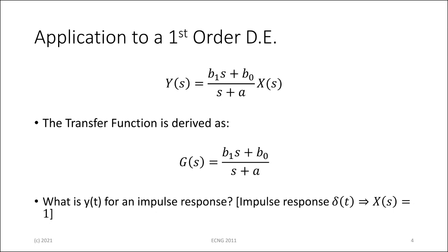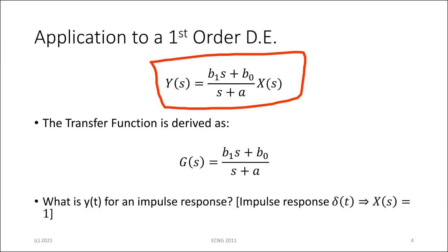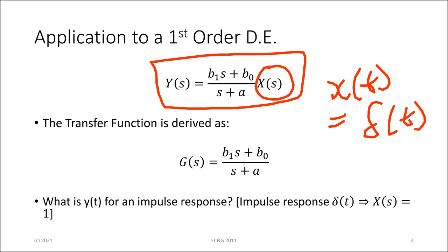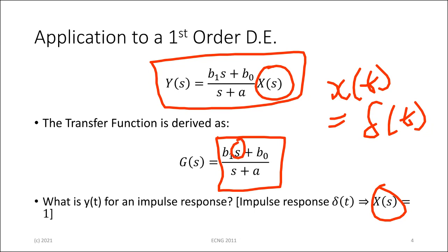If it's a first order differential equation and the initial conditions are all zero, then we have a first order transfer function. Remember what the transfer function is — the transfer function is when X(T) is an impulse, implying that X(S) is one. Then that expression is the system transfer function.